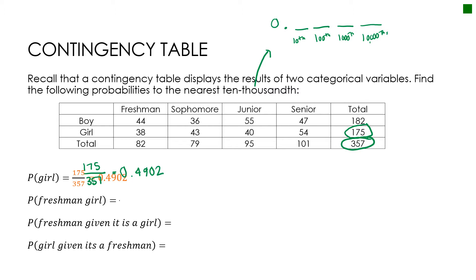The second one: probability of a freshman girl. Again, out of the 357 total people, how many are freshman girls? The freshman girls cell gives us 38 freshman girls out of 357. Using a calculator to divide, I get 0.1064.